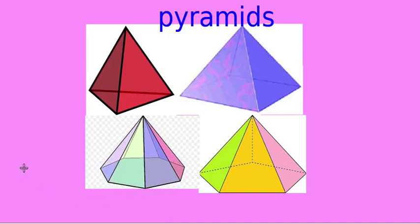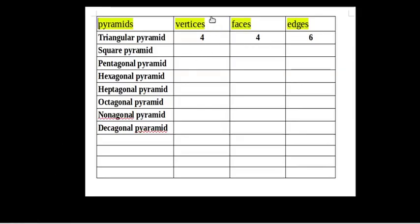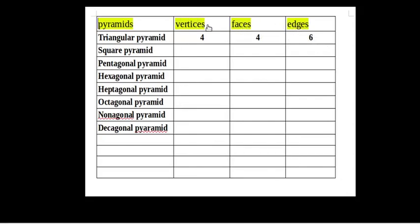There exists a relationship between the vertices, faces, and edges of pyramids. You complete this table — V for vertices, F for faces, E for edges. Try to find out the relation between V, F, and E. The triangular pyramid is completed: four vertices, four faces, and six edges. Similarly, complete the others. It is an important relation between vertices, faces, and edges, and you will get a formula.